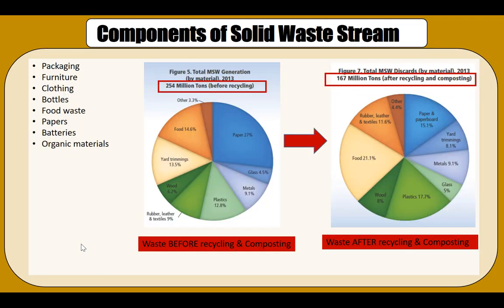This chart shows data for the US for the year 2013, which is the latest available year for municipal solid waste data. It shows the different components of municipal solid waste and their relative percentages before and after recycling. The waste is typically composed of paper, glass, metal, plastic, rubber, leather, textile, yard trimmings, and food waste. Before any recycling happened, 254 million tons of municipal solid waste was generated, with a large portion being paper and yard and food waste.